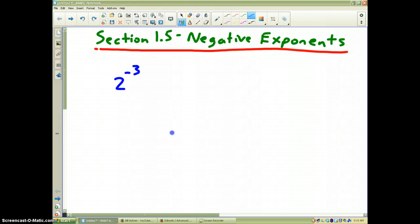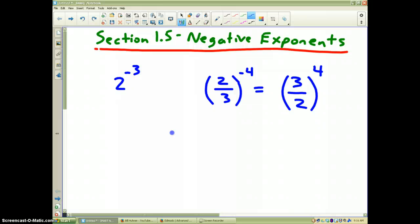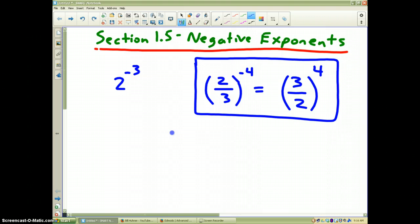Negative exponents basically refer to fractions. And what I want you to think about is, let's say you have a fraction 2/3, which is to the negative 4 power. Anytime you have a fraction or a number to a negative power, it's the same or it's equal to the reciprocal of that fraction to the positive power of the same number. It's like taking the fraction, flipping it upside down, and then making the power positive.